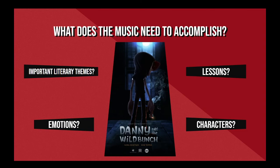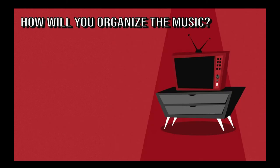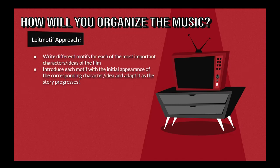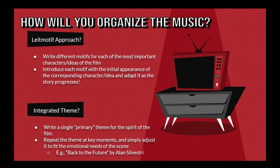Once you've figured these out, consider how you want to organize your music in general — in other words, how do you want to actually use the thematic material throughout the story? Maybe you want to take a motivic approach and write different themes for the most important characters, emotions, or literary themes of the film, and then introduce each motif with the initial appearance of their corresponding characters or ideas, adjusting and reusing each theme as they develop throughout the film. Another common approach is the integrated theme approach, where a single primary theme is written to capture the whole spirit of the film and then reused and rewritten to fit whatever emotional setting is most needed on a case-by-case basis. Other themes or ideas might also be used, but none will be as important as the primary theme. This approach is a little rarer in modern days, but one popular example would be Alan Silvestri's theme for Back to the Future.